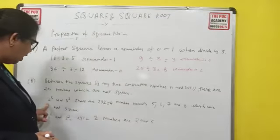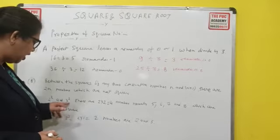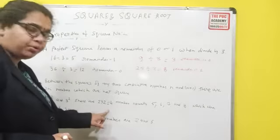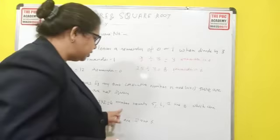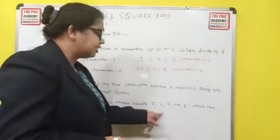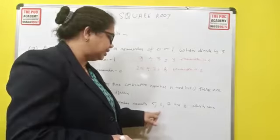So between 2 squared and 3 squared, there are 2n numbers, that is 2 times 2, which is 4. And the numbers are 5, 6, 7, and 8.